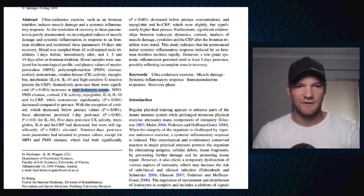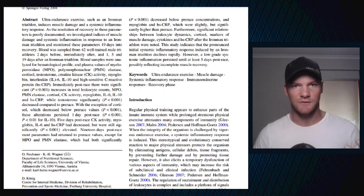Interleukin IL-6, IL-10, and high sensitivity C-reactive protein - measures of inflammation. Particularly high sensitivity C-reactive protein, a measure of overall systemic inflammation. Immediately post-race there were significant increases in total leukocyte count, myeloperoxidase, polymorphonuclear elastase, cortisol, creatine kinase activity, myoglobin, these interleukins and high sensitivity C-reactive protein, while testosterone significantly decreased compared to pre-race. With the exception of cortisol which decreased below pre-race values, these alterations persisted one day post-race. Five days post-race creatine kinase activity, myoglobin, interleukins and CRP had decreased but were still significantly elevated.